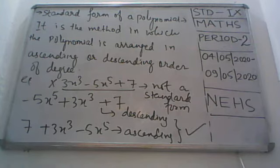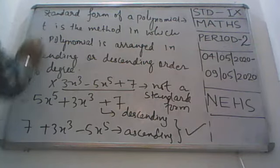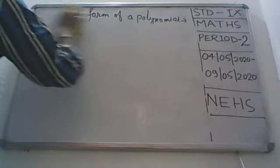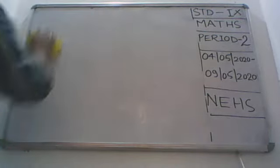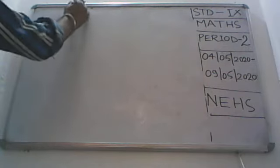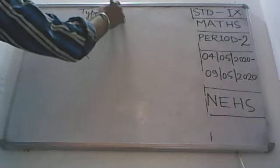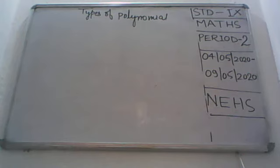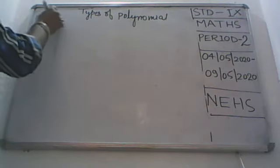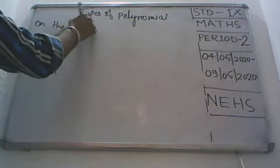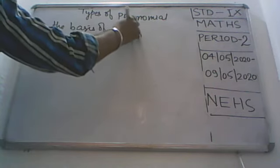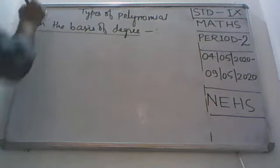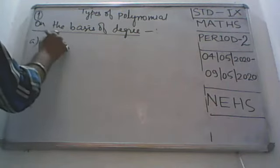Now we will discuss some more topics. We will differentiate polynomials — now we are in a position to understand the types of polynomials. Number one: types of polynomial on the basis of degree.